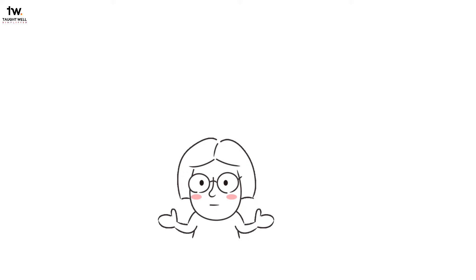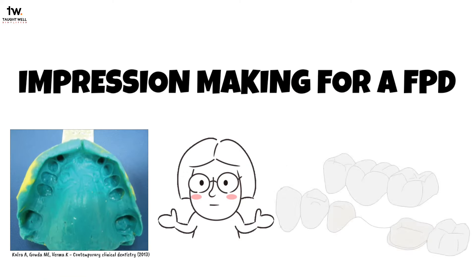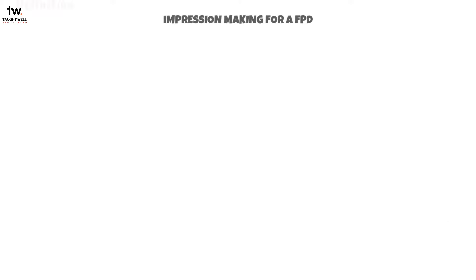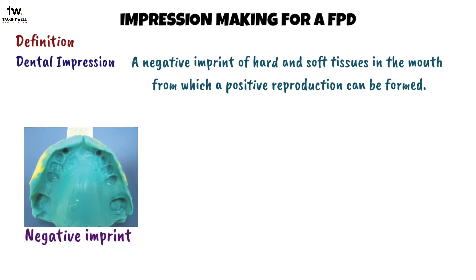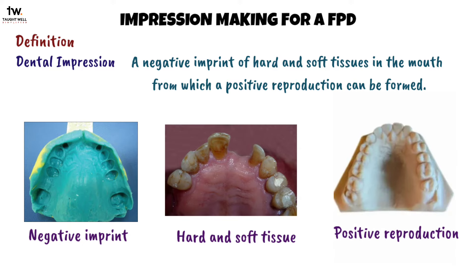Today, we will be learning about impression making for a fixed partial denture. The definition of a dental impression is a negative imprint of hard teeth and soft tissues in the mouth from which a positive reproduction, cast, or model can be formed.